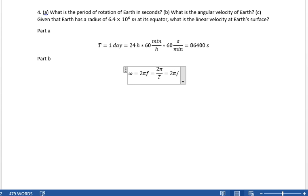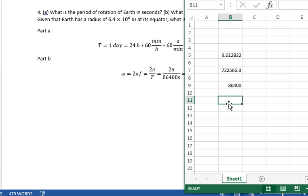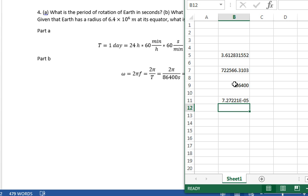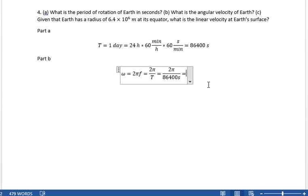So 2 pi divided by 86,400 seconds equals... The angular velocity is 7.27 times 10 to the minus 5th. 7.27 times 10 to the minus 5th, and that is radians per second.